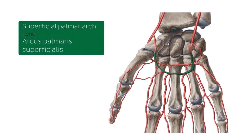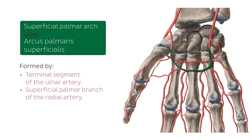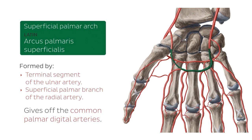Let's take a closer look at the superficial palmar arch. This one is formed by terminal segments of the ulnar artery — as you can see here on this image, this is the ulnar artery — and also the superficial palmar branch of the radial artery, which you can also see here. This is the radial artery, and you can notice here a bit of the radius and the ulna for location context. The superficial palmar arch gives off the common palmar digital arteries to the fingers, except the thumb. You can clearly see here the different palmar digital arteries branching off this arch, with nothing going towards the thumb — there is a different supply for that which we will be talking about later.